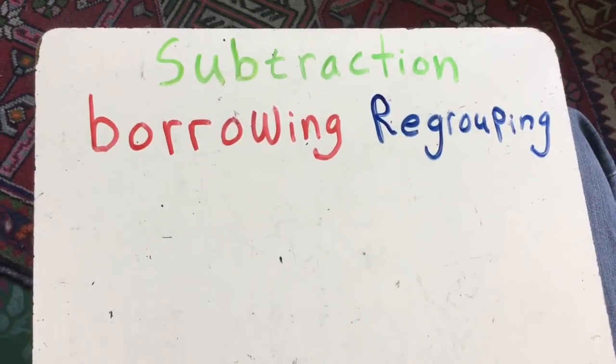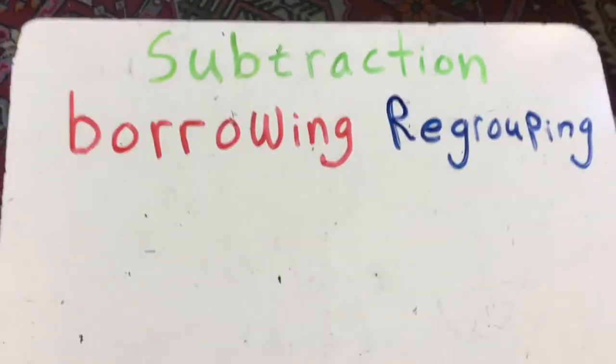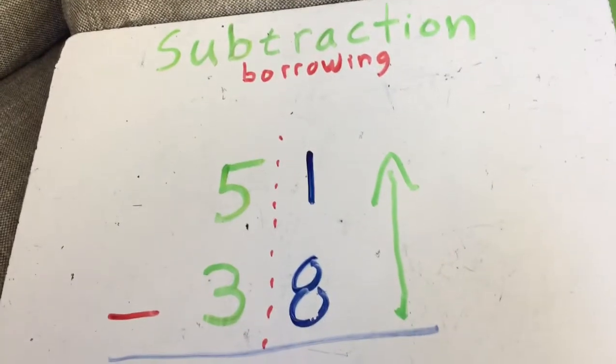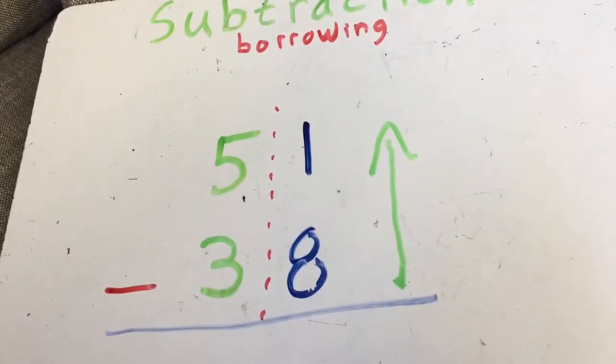Borrowing, regrouping, subtraction. Okay, here's a few examples. Okay, subtraction, borrowing. Subtraction, that's the sign for subtraction, means to take away. We're taking away.